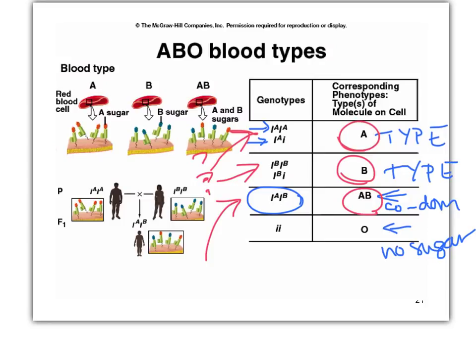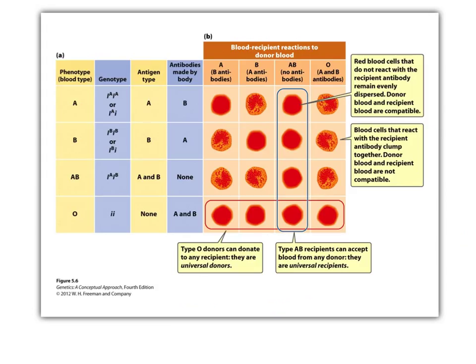If you're AB, you do know your genotype, because you have to be I^A I^B. And if you're type O, you know your genotype as well. Here's a schematic of blood type, showing your genotypes and your antigen types. If you want to look at transplant rejection or blood donation rejection, you can check this out.